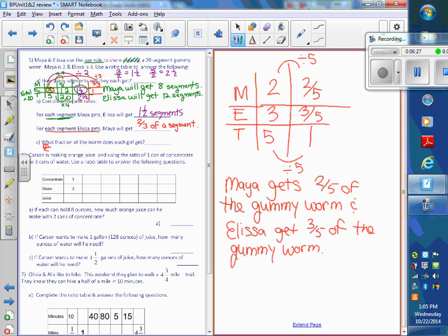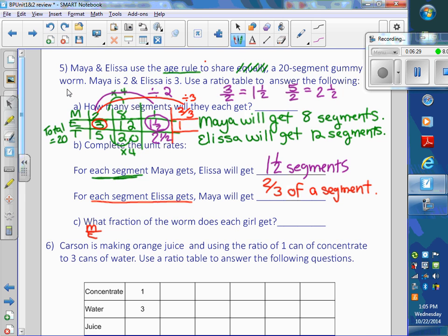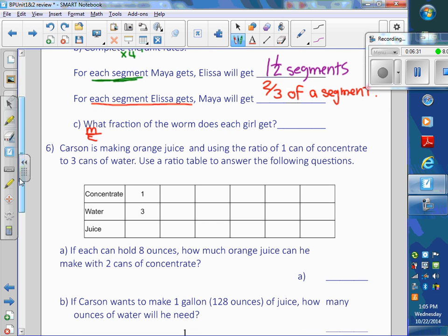So back on this page, then you might write Maya, 2 fifths, Alyssa, 3 fifths.